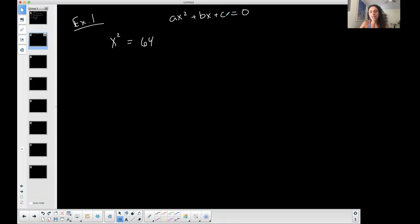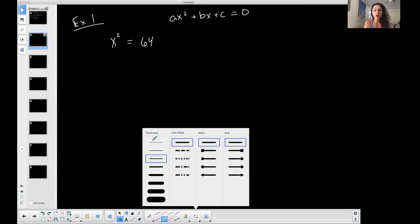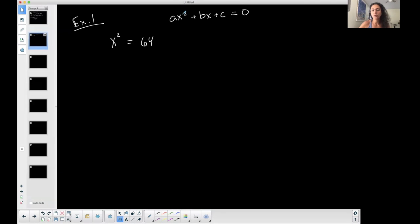This one is not. It has the squared term and it has the constant term, but it's missing that middle term. But that's okay, because we could still solve it. But because of that, we could use the square root property to solve it.